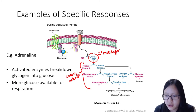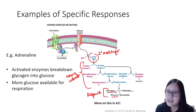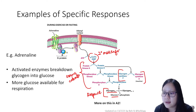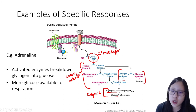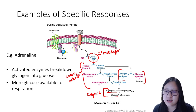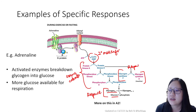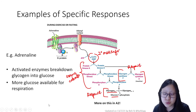As a result of the enzyme cascade, there is more glucose available for respiration — that's the specific response. Glycogen synthase is also inactivated, since you want to stop synthesizing glycogen and instead break it down. So both glycogen breakdown and inhibition of glycogen synthesis are specific responses of the target cell to adrenaline.